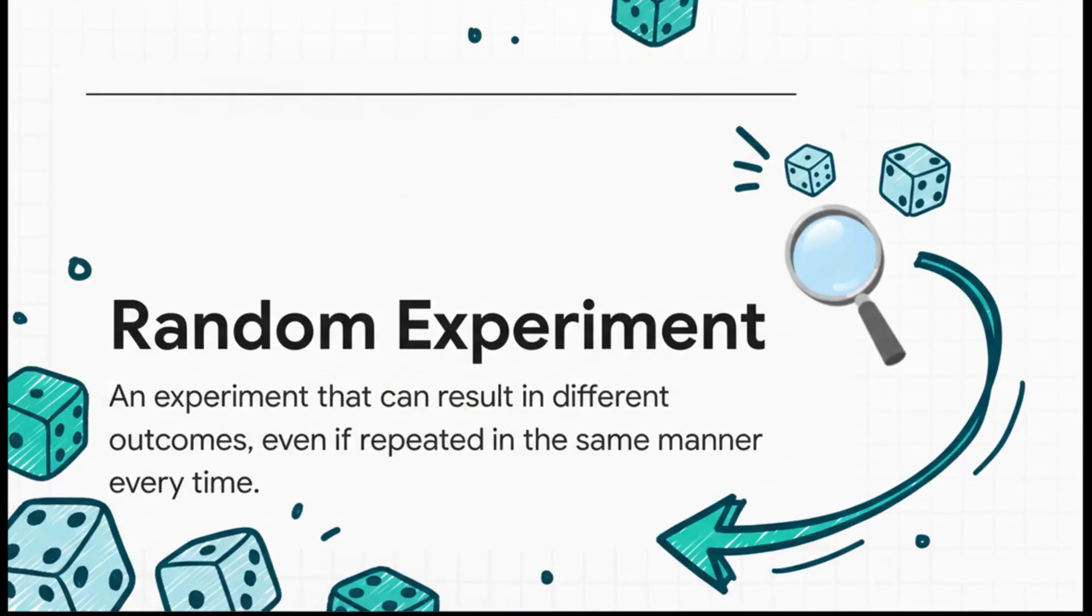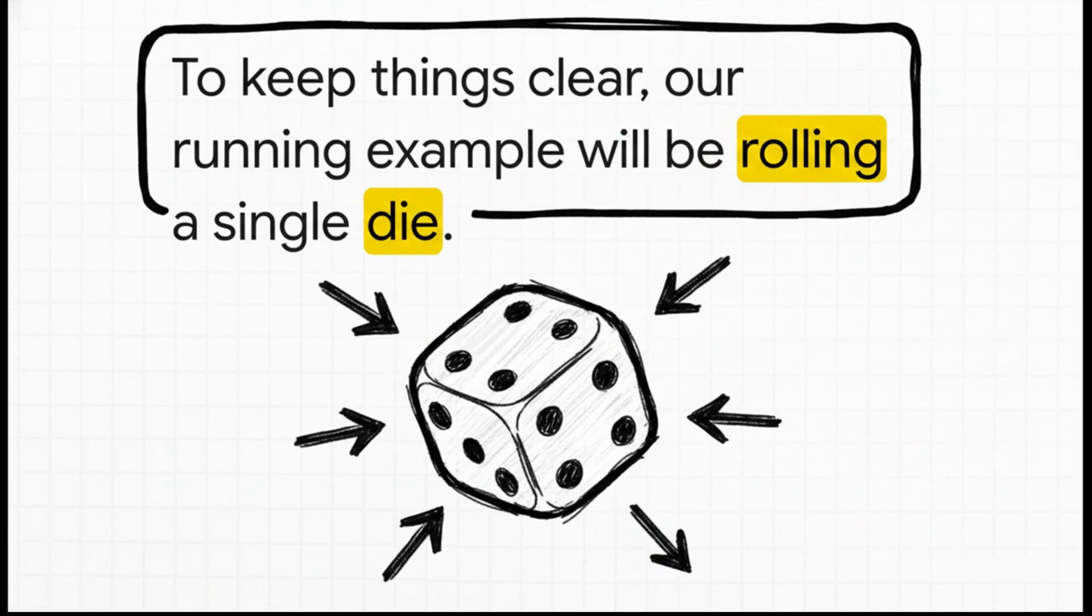Okay, the starting line for any probability problem is what we call a random experiment. Now that sounds super technical, but it's not. It's just a fancy term for any process where you don't know the exact outcome ahead of time. You know, like flipping a coin. You know it's going to be heads or tails, but you don't know which one. Same with rolling a die. That uncertainty, that's the key. And to keep things really clear, we're going to stick with one simple example through this entire explainer, rolling a single standard six-sided die. This is going to help us ground all the big abstract ideas in something we can all easily picture in our heads.